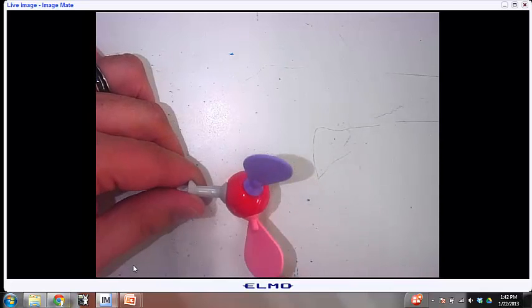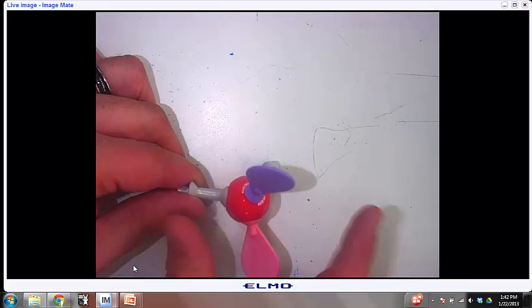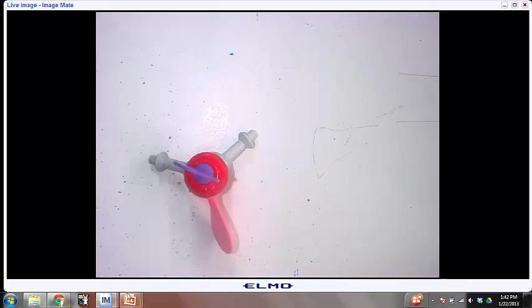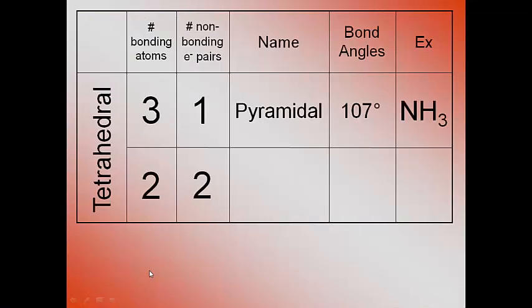So these electron pairs, remember, take up a lot of space and they cause greater repulsions. But remember, we're all dealing with VSEPR, which is, we were trying to eliminate those repulsions. So now I've got a molecule that's forming a bent geometry. And in order to reduce down the repulsions between the electron clouds, it forms 104.5 degree bond angles. An example of this is water.